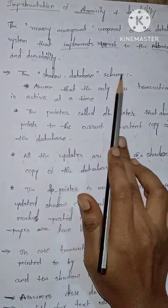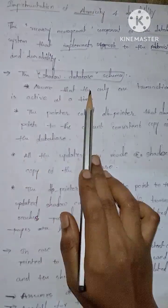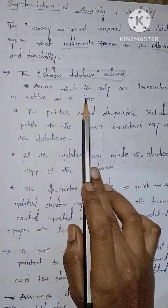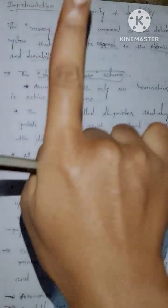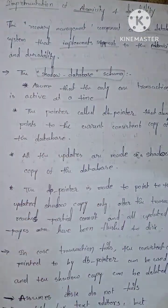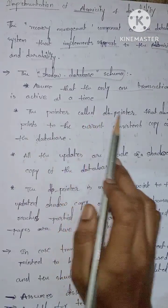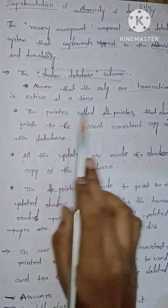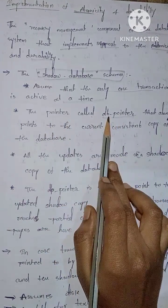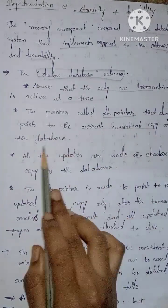The shadow database schema assumes that only one transaction is active at a time. The pointer called db-pointer points to the current consistent copy of the database.